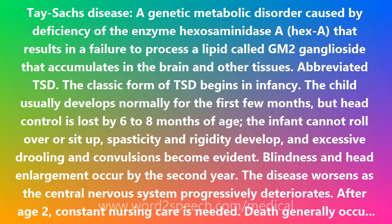Blindness and head enlargement occur by the second year. The disease worsens as the central nervous system progressively deteriorates. After age 2, constant nursing care is needed. Death generally occurs by age 5, due usually to cachexia — wasting away — or aspiration pneumonia. There are several forms of TSD.